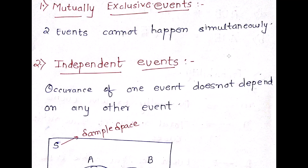Let's begin with some basic terminologies. First is Mutually Exclusive Events. Two events, let's say A and B, are said to be mutually exclusive if they do not occur simultaneously — that is, there is nothing common between them. If there is nothing common in them or they do not happen at the same time, they are said to be mutually exclusive events.